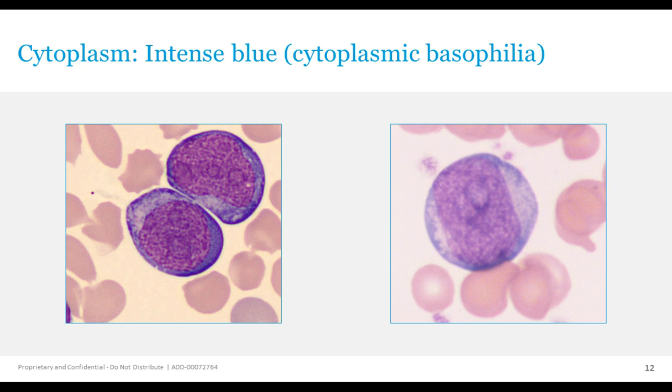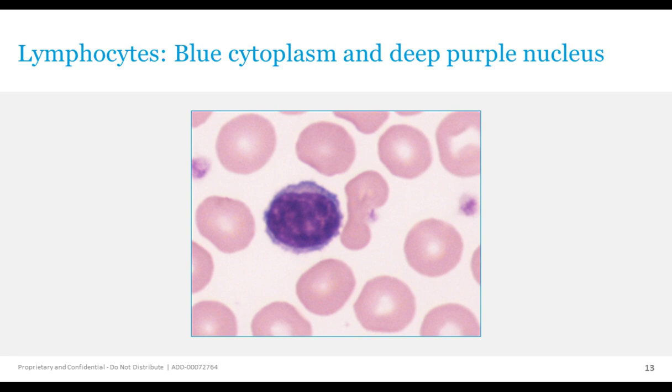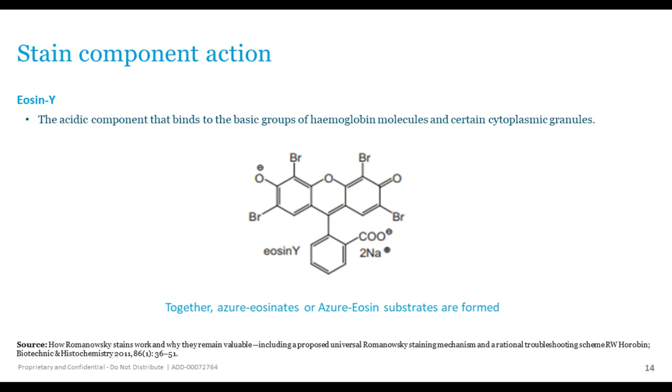Here we have an example of a lymphocyte — a more mature cell — with its dark purple nucleus and a small amount of blue cytoplasm around the outside. This distinction between the purple nucleus and blue cytoplasm is what allows us to say the stain is working well.